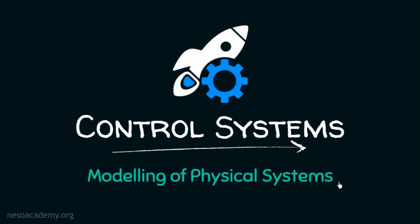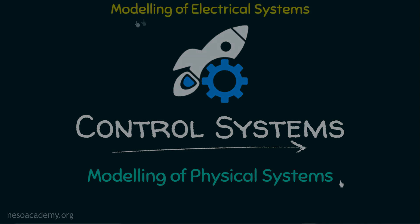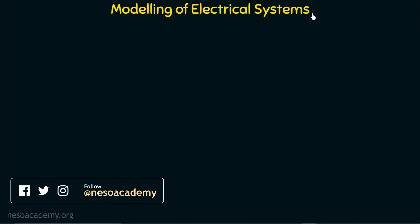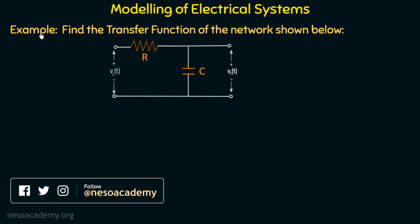We will divide this chapter into two parts. The first part will be the modelling of electrical networks and the second part will be the modelling of mechanical systems. In this lecture, we will start with the modelling of electrical networks. We will discuss various electrical networks and try to analyse them by converting them into their equivalent signal flow graphs. Let's start with a basic example.